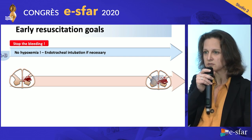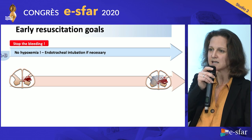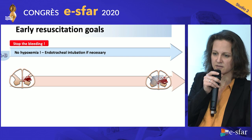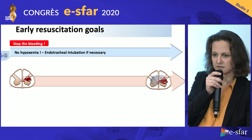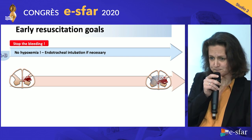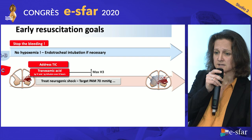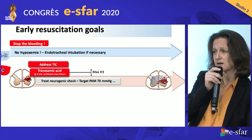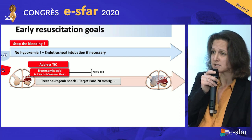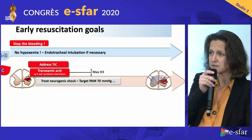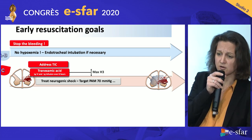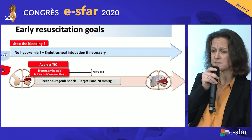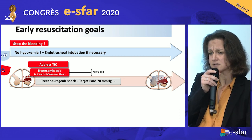When it comes to C — circulation — you have to address traumatic-induced coagulopathy as in any severe trauma patient with hemorrhagic shock, following the guidelines. And you have to give tranexamic acid as early as possible, even in the pre-hospital setting and within the first three hours.